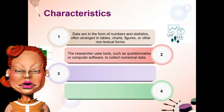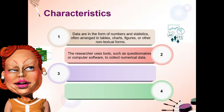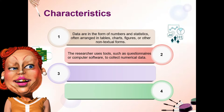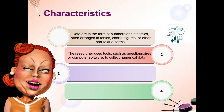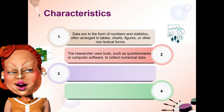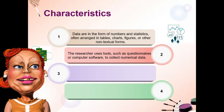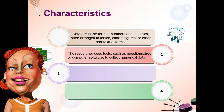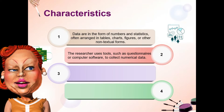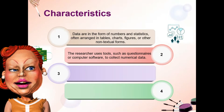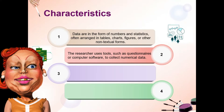Pangalawa, the researcher uses tools such as questionnaires or computer software to collect numerical data. At dahil nakarely ang quantitative research sa numbers, mas maraming data, mas maganda — mas sigurado ang result. At magagawa mo lang yun kapag meron kang computers, o kaya cellphone, o kaya namimigay ka ng mga questionnaires sa mga respondents mo. Dapat mabilis, dapat marami, para sureness.